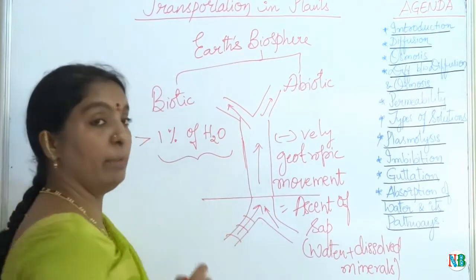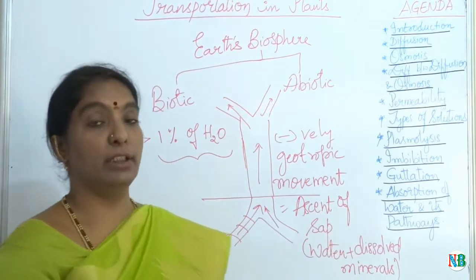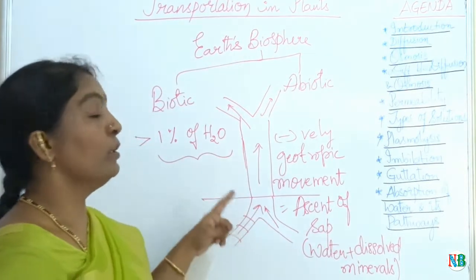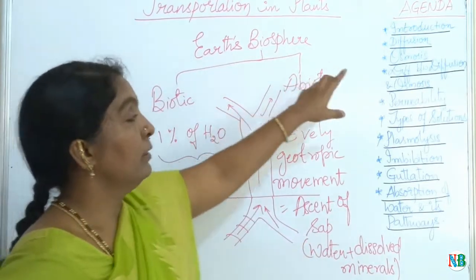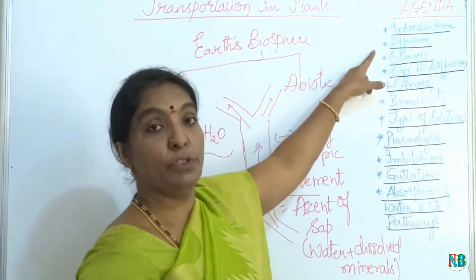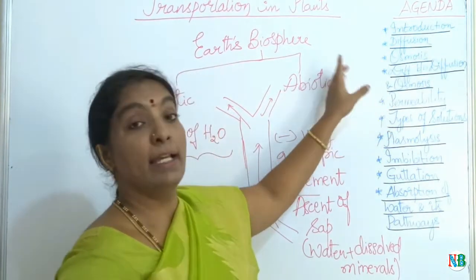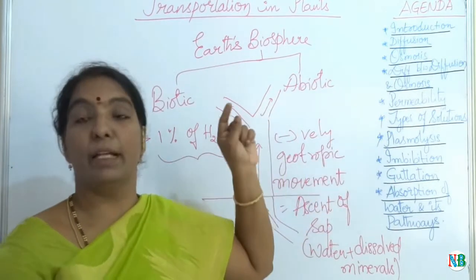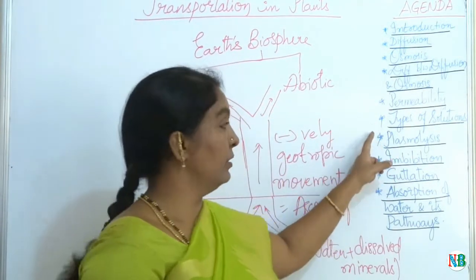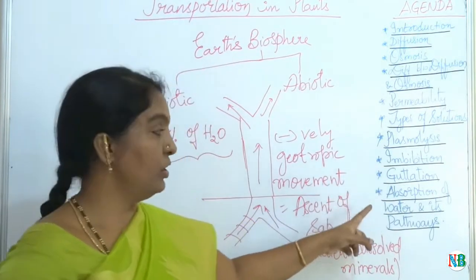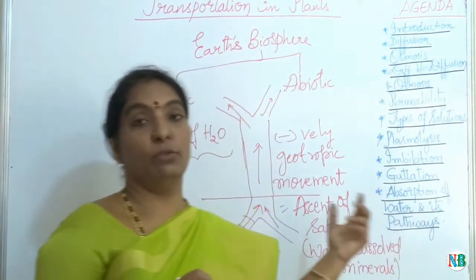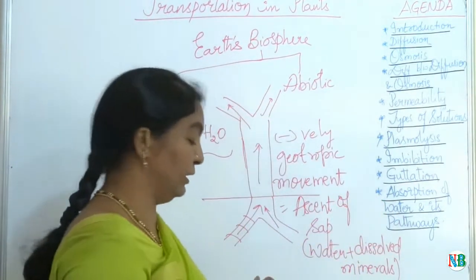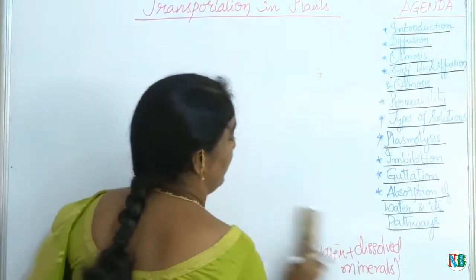Water from the root hairs has to be transported to various parts of the plant body crossing the biological membranes. So today, in this session, we are going to learn about how water gets transported from one cell to another cell inside the plant body and what processes are involved in it. We are going to deal with diffusion, its types, osmosis, the difference between diffusion and osmosis, permeability, types of solutions seen inside plant cells, types of plasmolysis, imbibition, guttation, absorption of water and its pathways. The first process is diffusion.